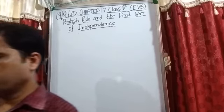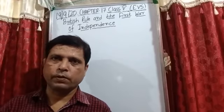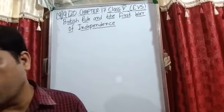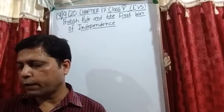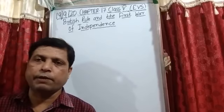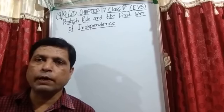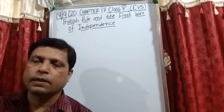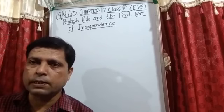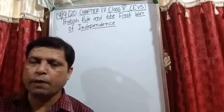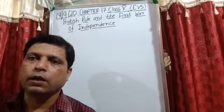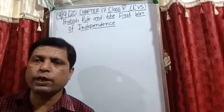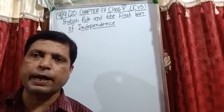So, students, we start with the new chapter - British Rule and the First War of Independence. What are the learning objectives of this chapter? The causes and effects of the First War of Independence in 1857. In this chapter, we will discuss what are the causes of the First War of Independence in 1857. How did the British rise to power? Because the British came to India to trade - how did they come to power, and what is the reason for that?